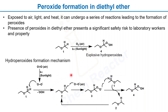Here is the mechanism of hydroperoxide formation in diethyl ether. The aerial oxygen, in the presence of sunlight, forms an oxygen radical. This oxygen radical abstracts the hydrogen radical from the diethyl ether molecule to give a diethyl ether radical.